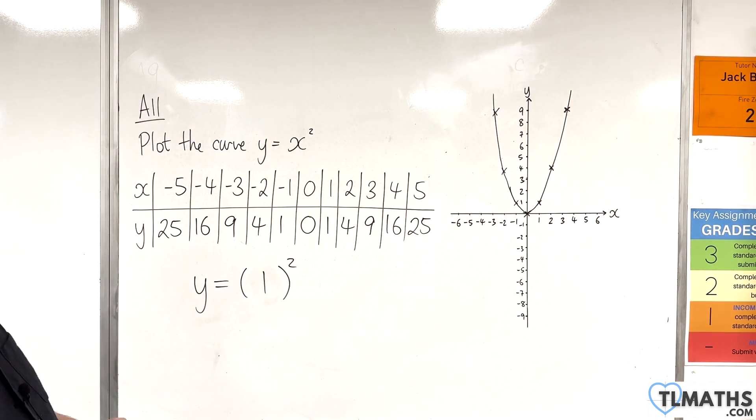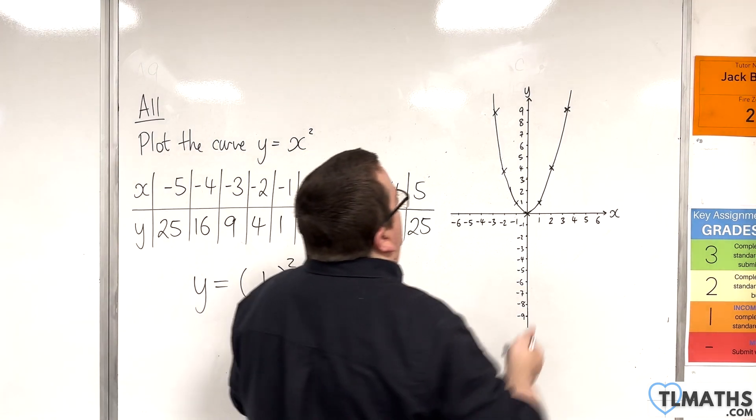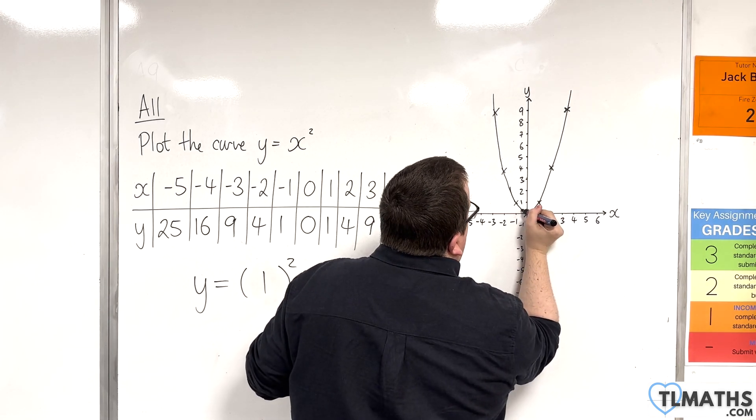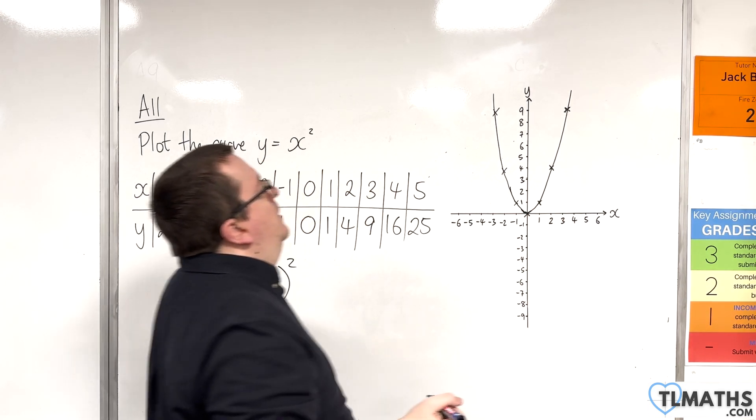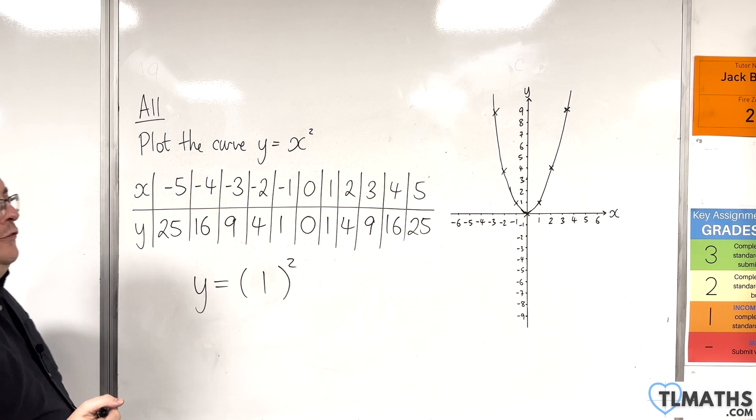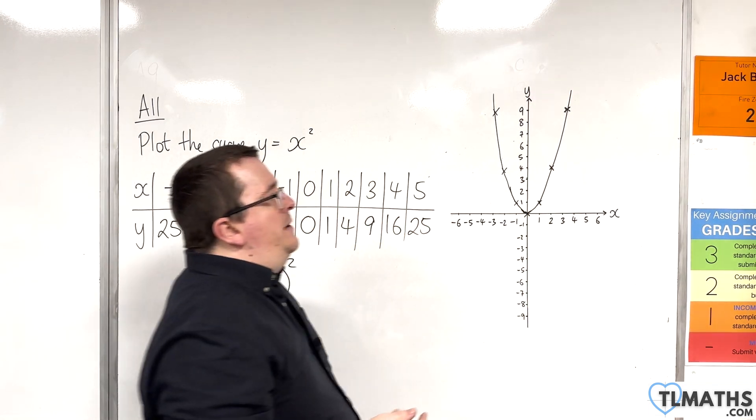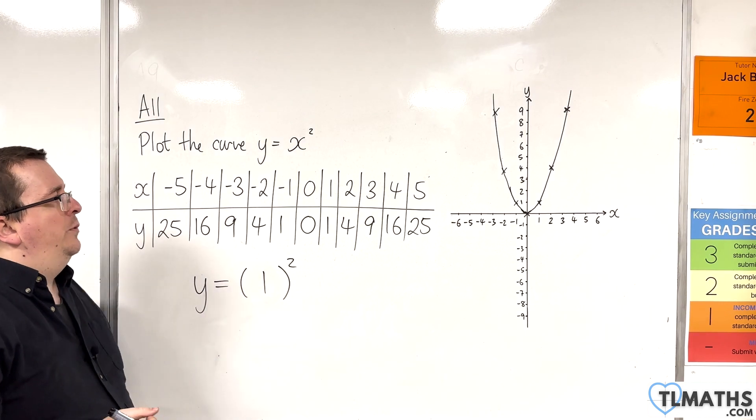But, hopefully, you're getting the idea here that you have a curve that does this. It goes through the origin and is symmetric as well. It has the y-axis as a line of symmetry, this curve, y equals x squared.